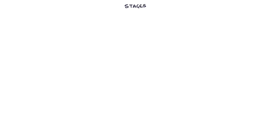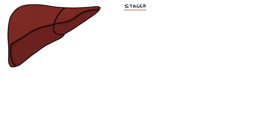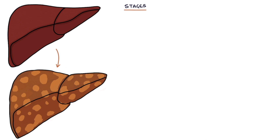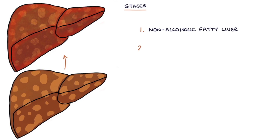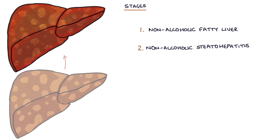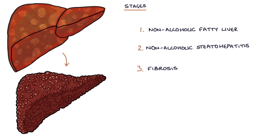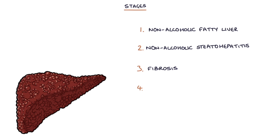The stages of non-alcoholic fatty liver disease in order are: non-alcoholic fatty liver, followed by non-alcoholic steatohepatitis, followed by fibrosis, and finally cirrhosis.